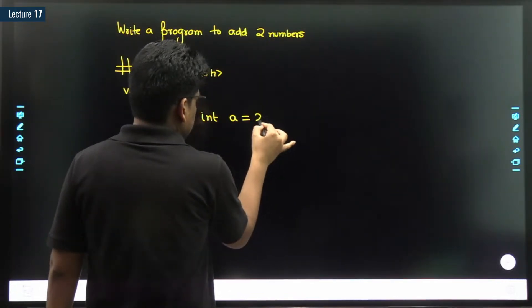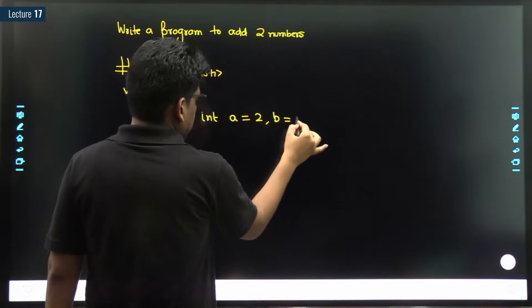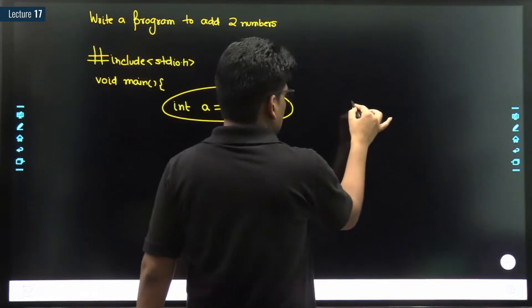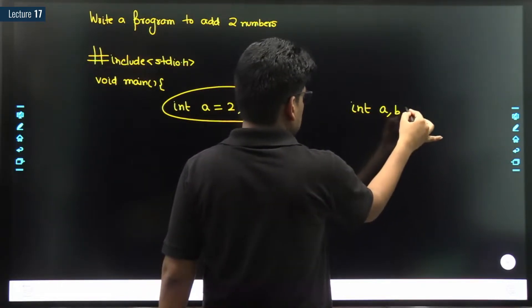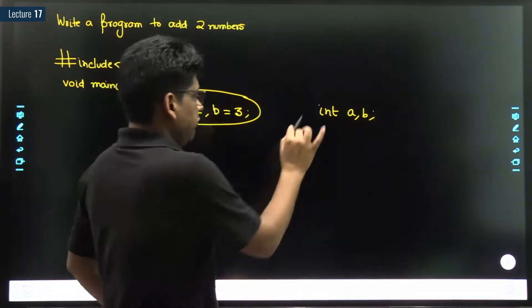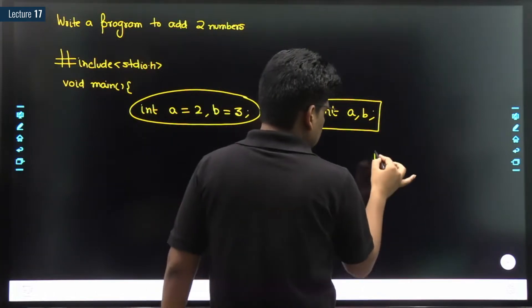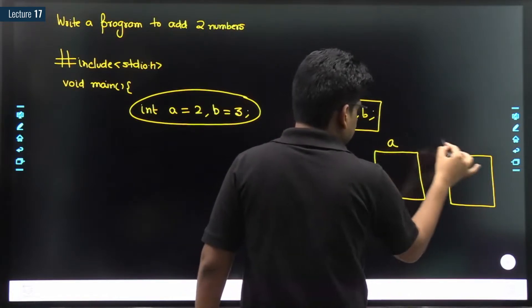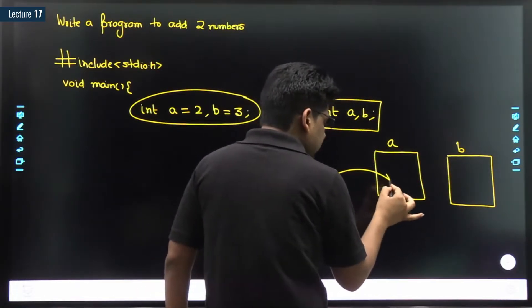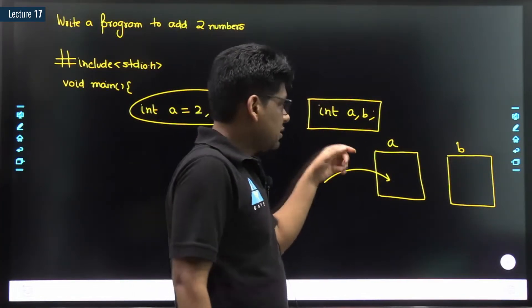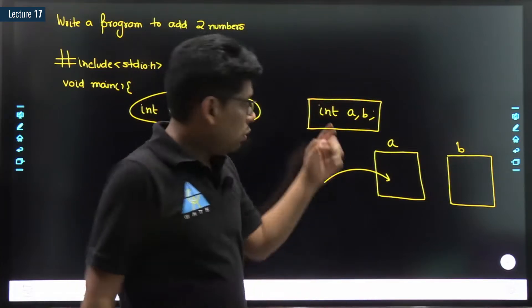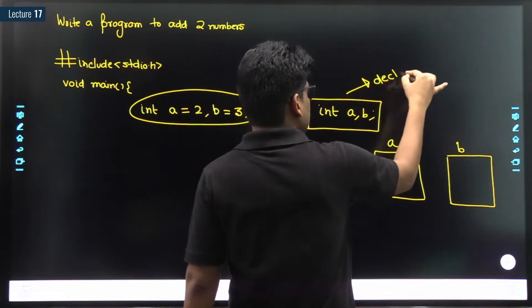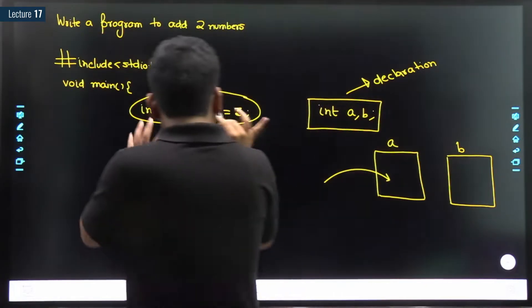a is equal to 2, b is equal to 3. Now, how is this different from the other form? With this form, what happened is: in memory, two named locations or two variables are created, but we didn't provide any value. So as of now, what is the value inside a? Garbage value. What is the value inside b? Garbage value. This is called declaration.